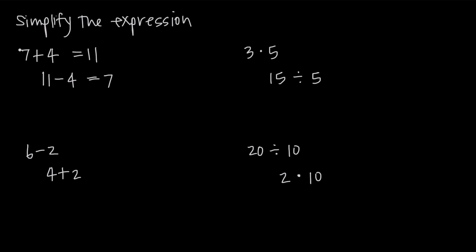So in other words, if we start with 7 and we add 4, we get to 11. If we then start with 11 and we subtract 4, we get back to 7. What's left is the positive 4 and the negative 4 — those are opposite numbers. So that tells us that addition and subtraction are inverse operations.